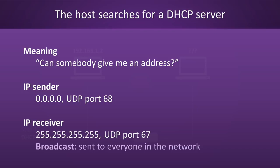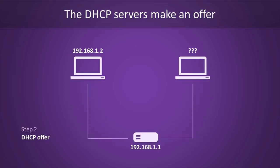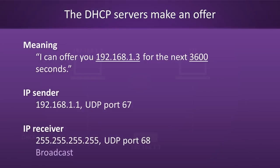UDP port 67 on the other hand is reserved for DHCP servers. Step 2 involves the servers offering an IP address to the new host. The way they do this is by broadcasting their offer to everyone on the current network, because they don't know where to find the new host. A typical DHCP offer message will say something like: I'm willing to give you this address for that amount of time. The sender will be the DHCP server and the receiver will again be the broadcast address. Note how the ports were flipped — the sender is UDP port 67 (the server port) and the receiver is port 68 (the client port).